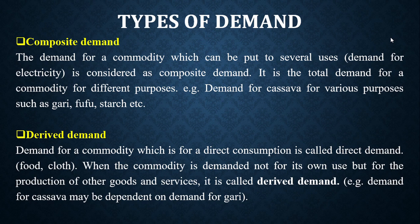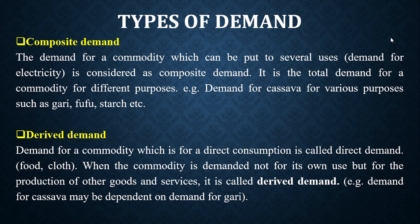It is the total demand for a commodity for different purposes. Another example is cassava — you can use it to make gari, fufu, starch, and others. So cassava has a composite demand. Then we also have derived demand.